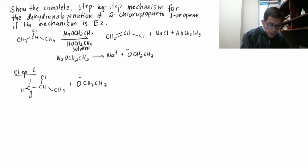This is the alpha carbon. This is the beta carbon. The base abstracts hydrogen off of the beta carbon, and that bond goes between that carbon and that carbon. This is what you get.